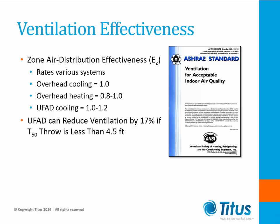This means that if the minimum ventilation requirement for an office environment is 5 CFM per person, the system must deliver at least 5 CFM per person. If the same space were supplied from a floor plenum using low velocity diffusers with a vertical throw to 50 feet per minute equal to or less than 4.5 feet, the EZ value would be 1.2. Anytime the EZ value is greater than 1, the amount of ventilation air is reduced. For the low velocity floor supply, the ventilation per person could be reduced by 17% because EZ equals 1.2. I should point out that this reduction in ventilation may not comply with local code requirements, so check first with local officials.